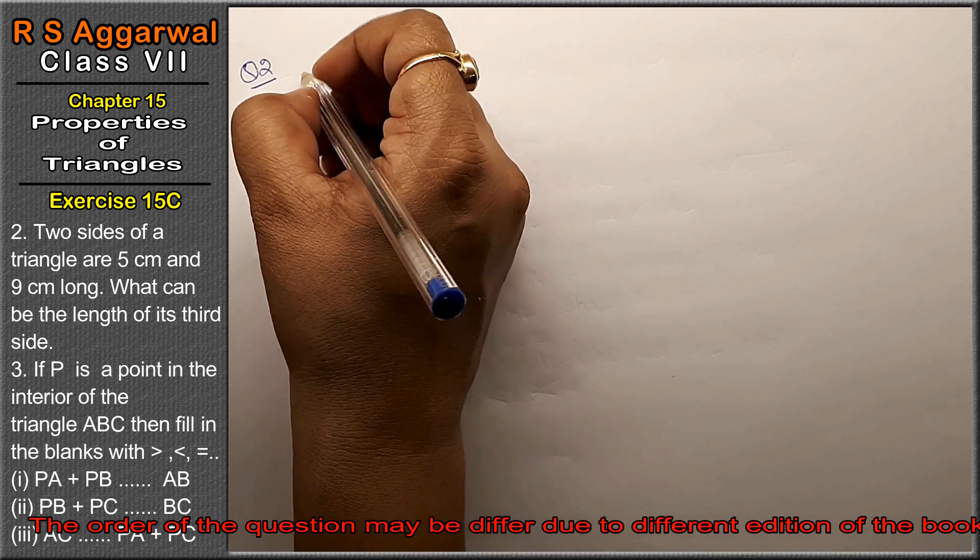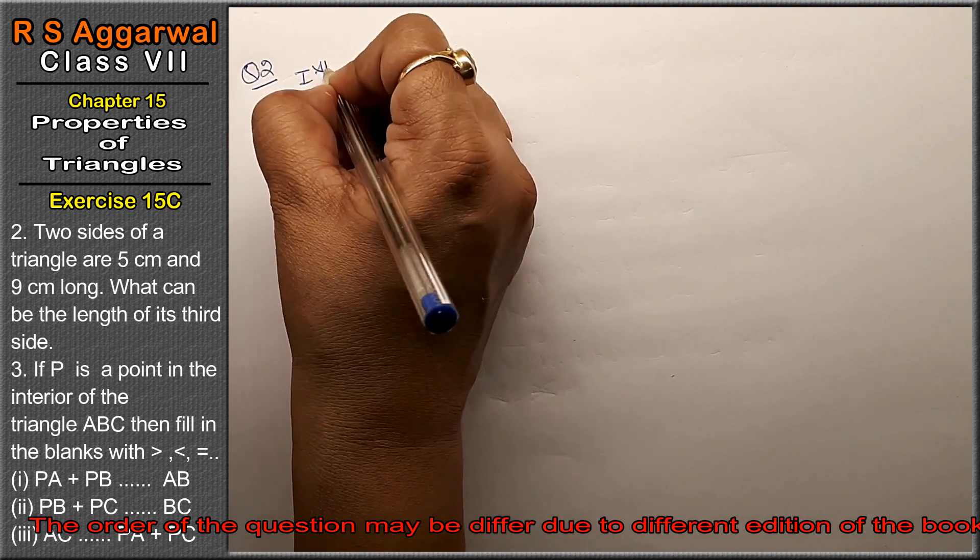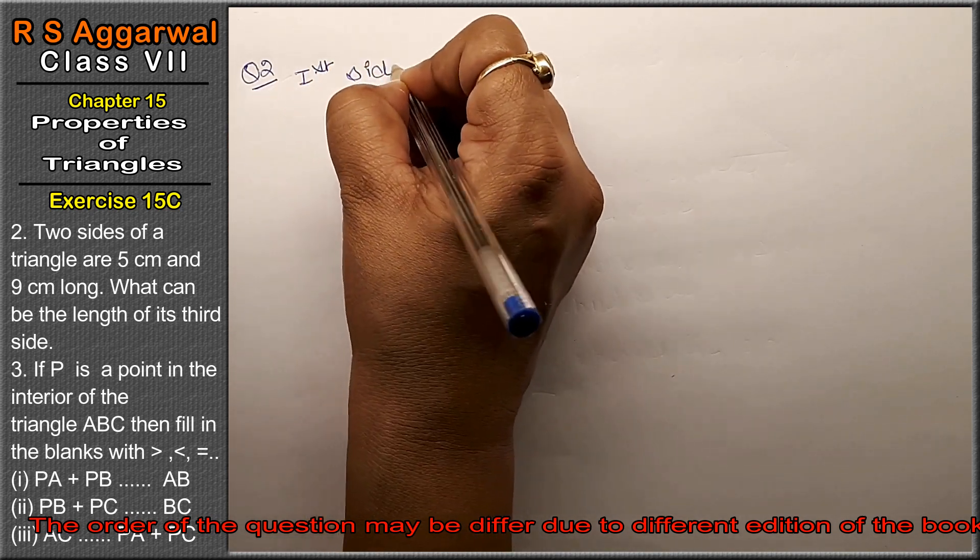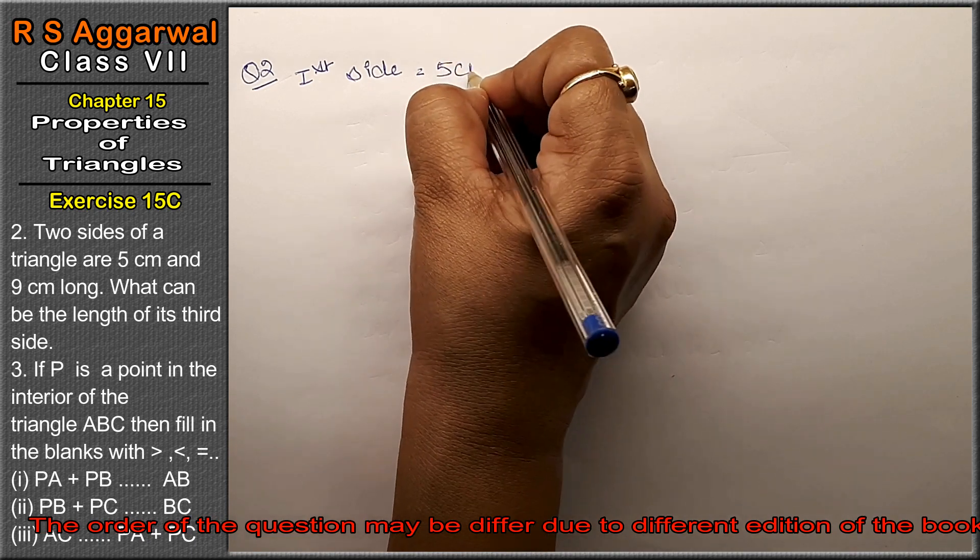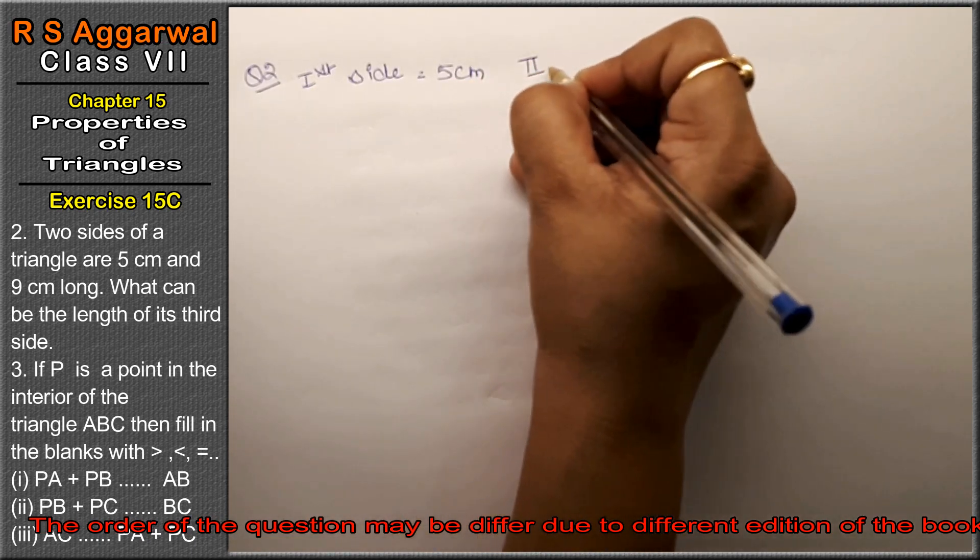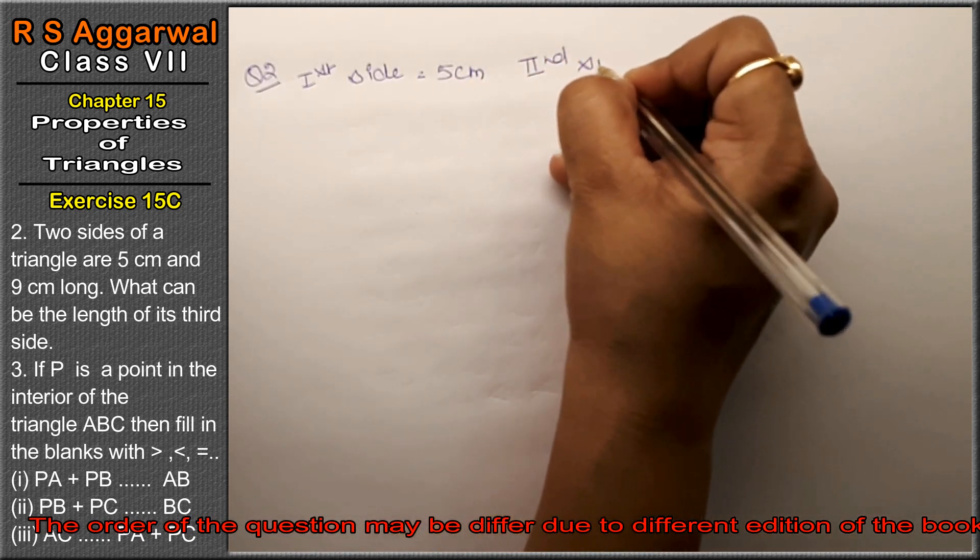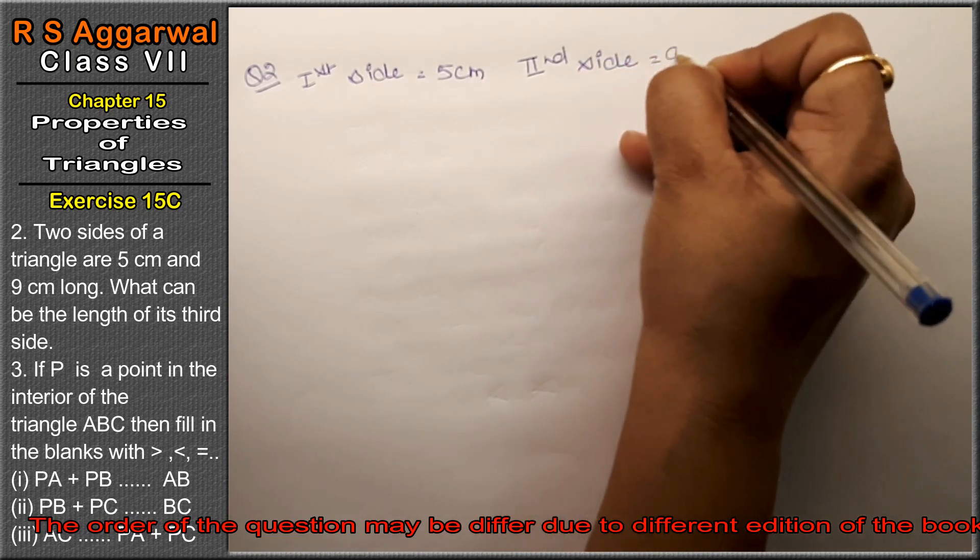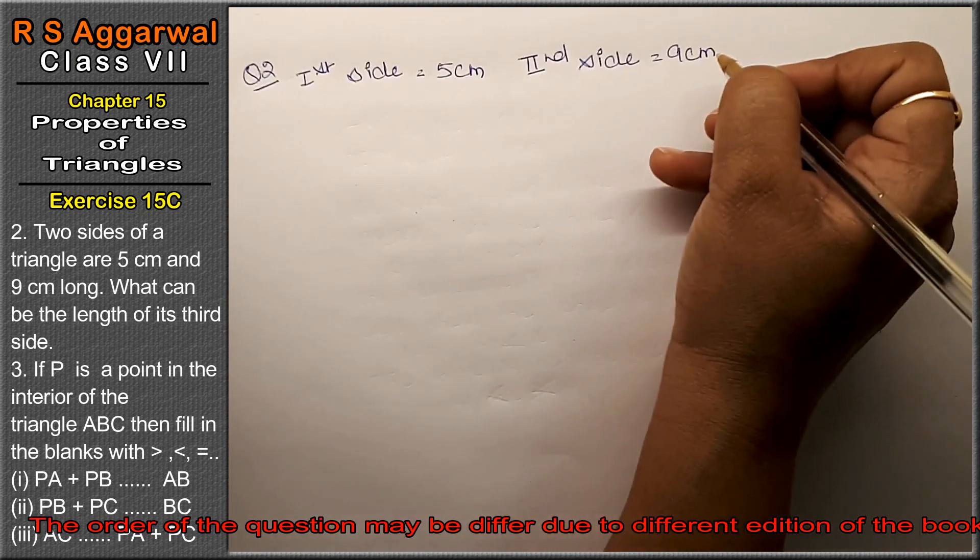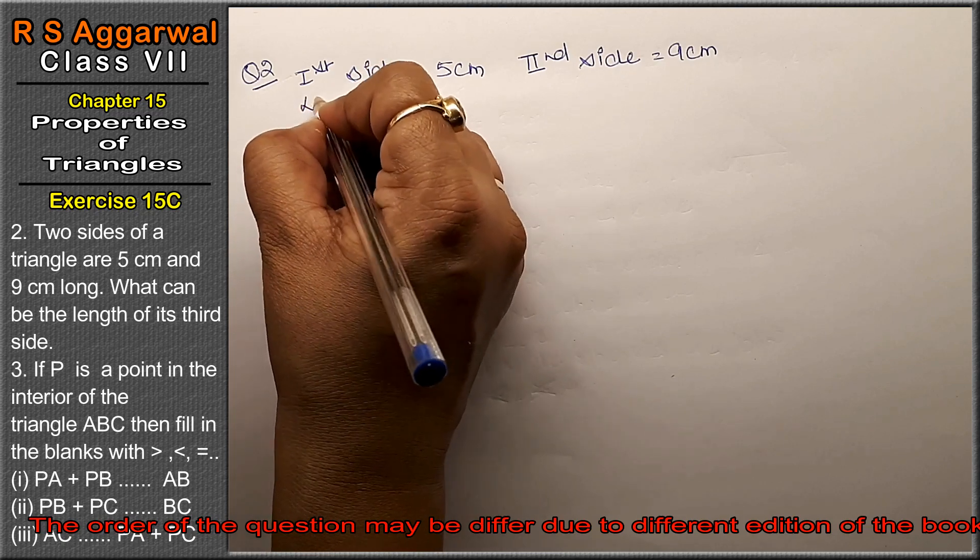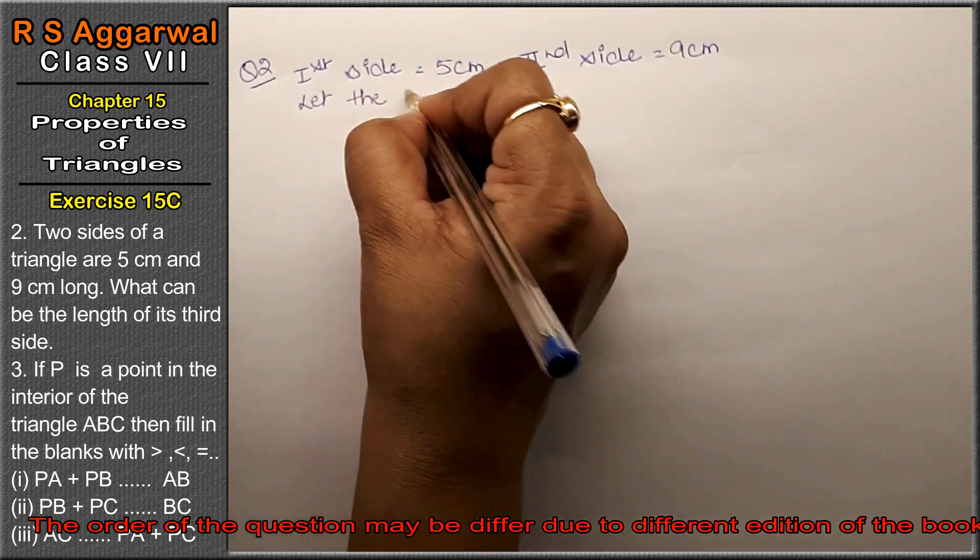We have two sides given. The first side of the triangle is 5 centimeters, and the second side of the triangle is 9 centimeters. We have to find out the third side. Let the third side be x centimeters.